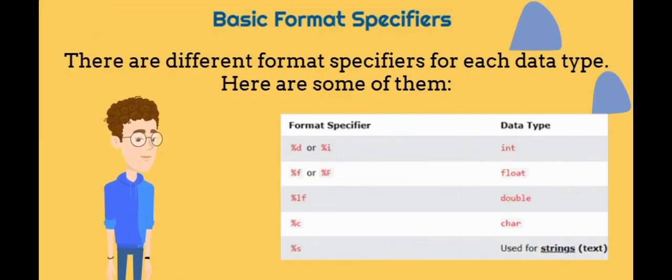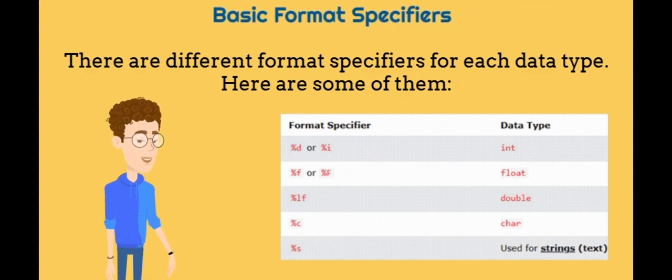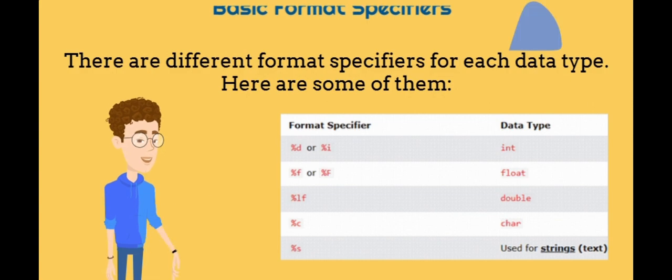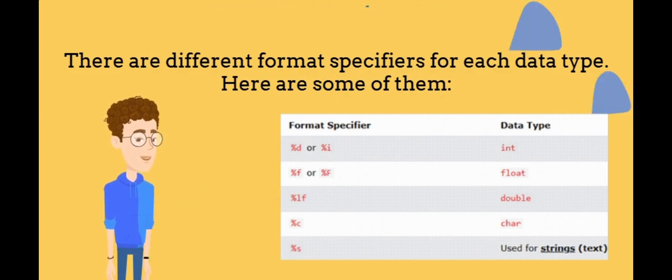Now, the basic format specifiers. There are different format specifiers for each data type. Here are some of them. %d or %i is used for the integers. %f is used for float. %lf for double. %c for characters. Finally, %s used for strings, text.